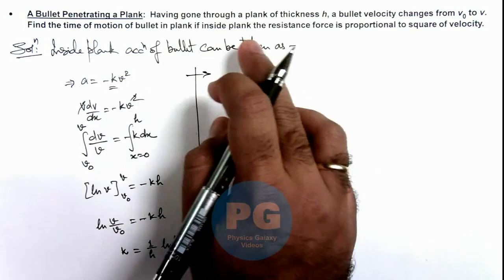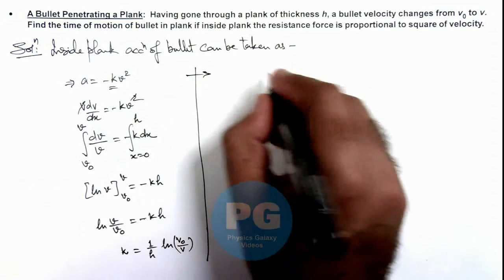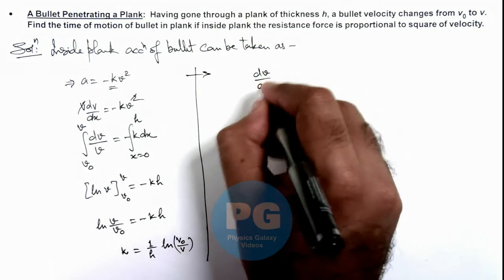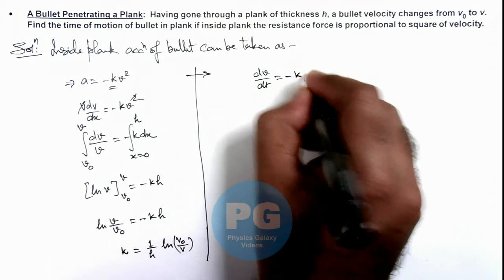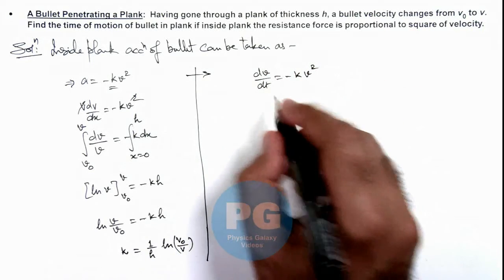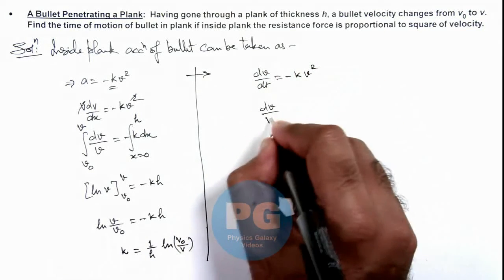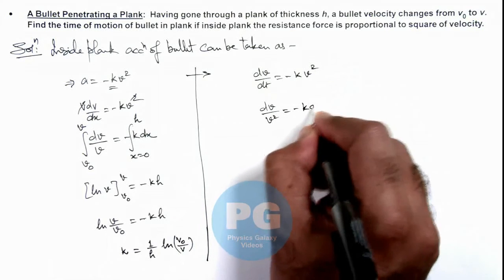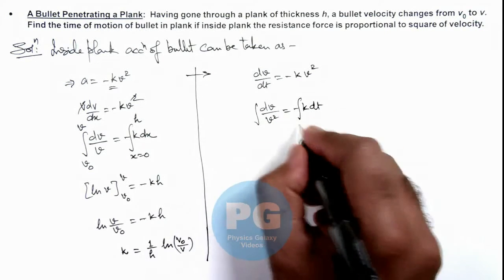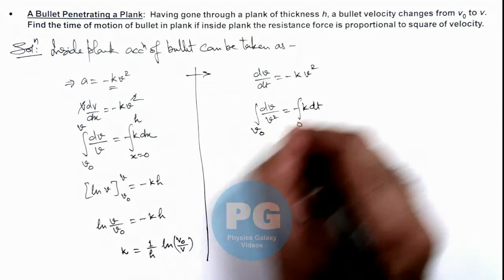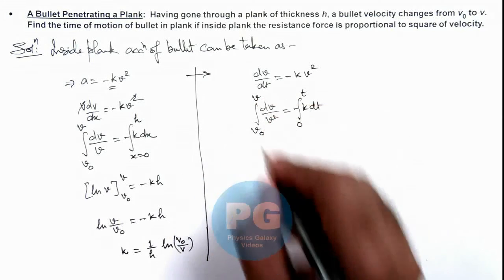Now further, we are required to find the time of motion of bullet, so we can write a = dv/dt = -kv². Here we can write it as dv/v² = -k dt. If we further integrate this, with t = 0 speed was v₀ and at time t speed changes to v,